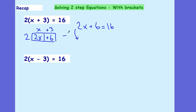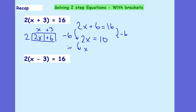And this looks just like all the other equations we've been solving so far. I want to subtract 6 from both sides, which gives me 2x equals 10. Therefore, x — if I divide by 2 — x is going to be equal to 5. x is equal to 5.